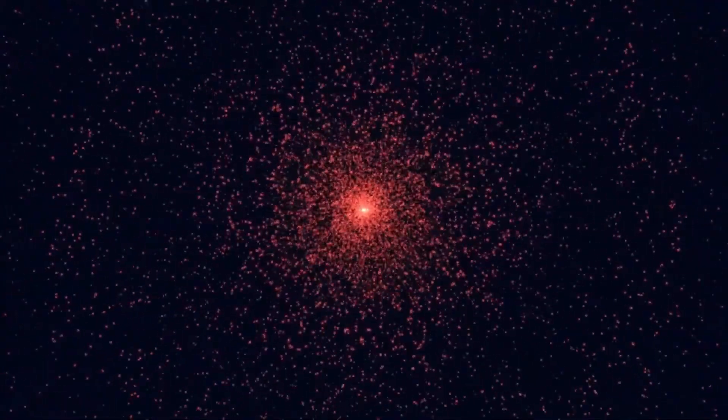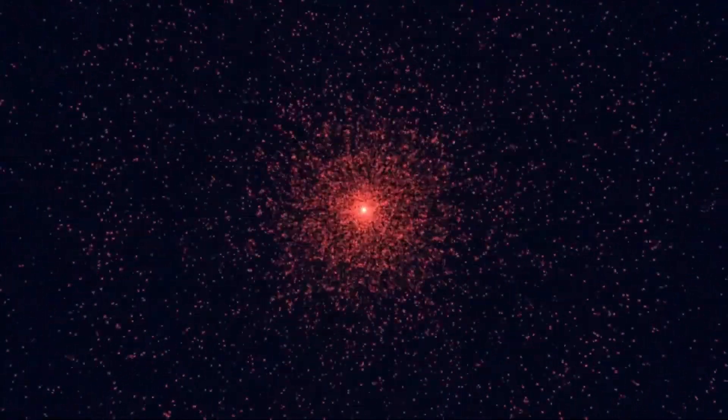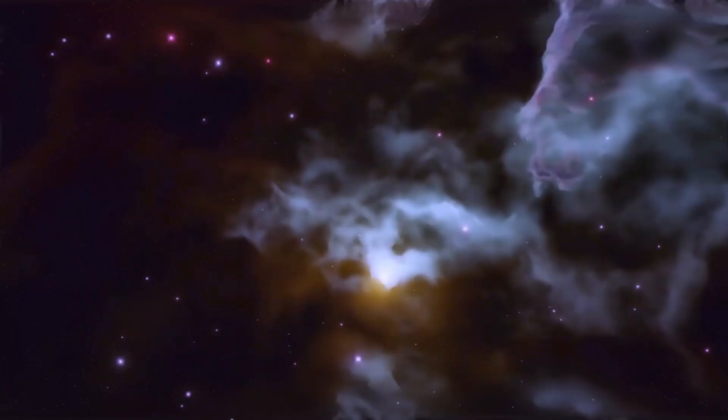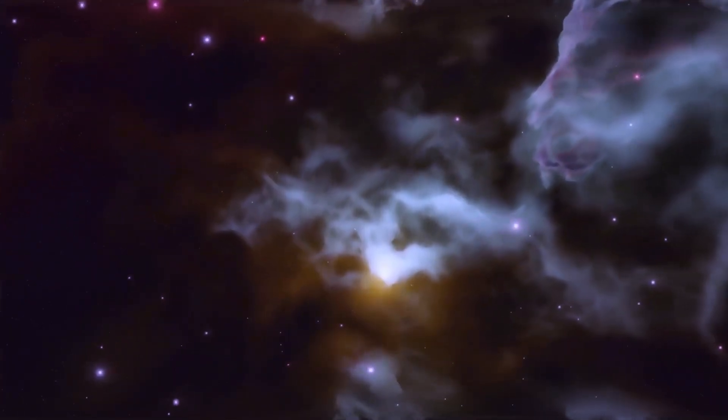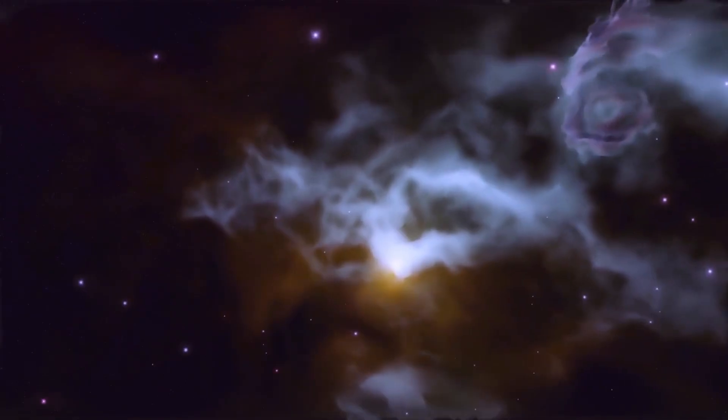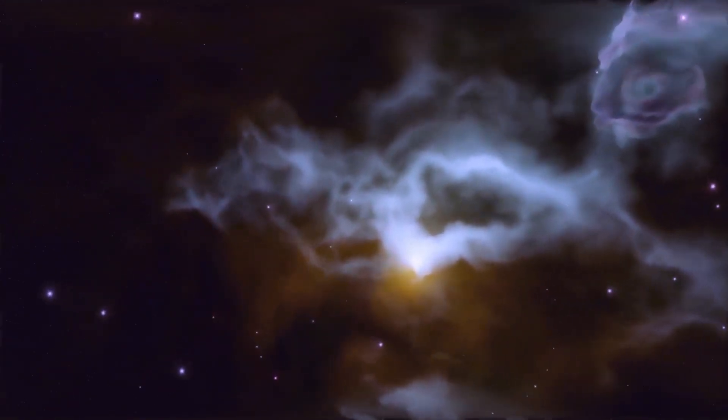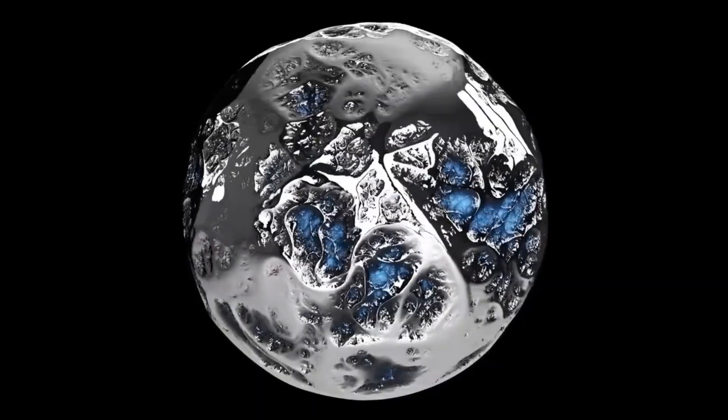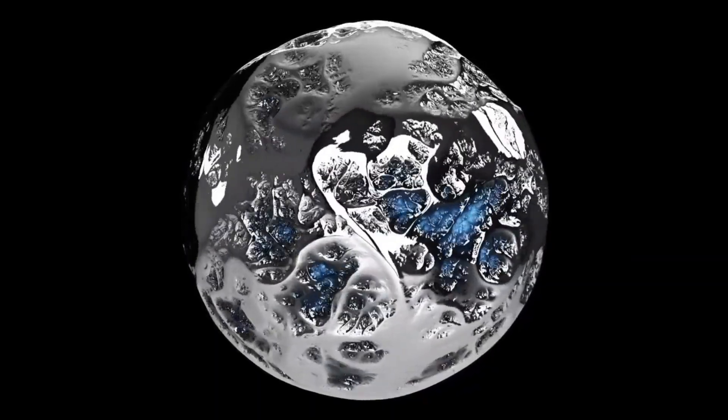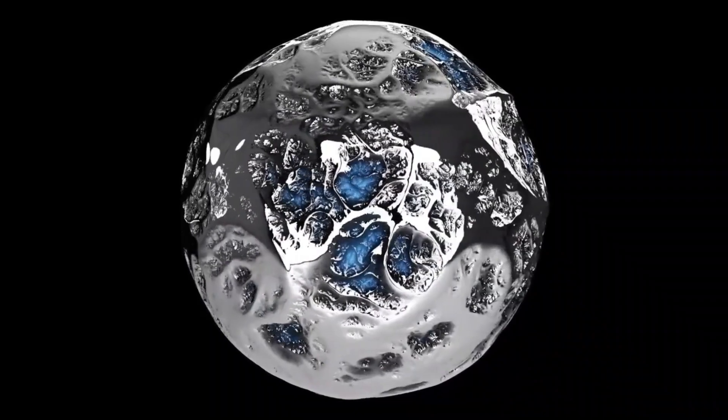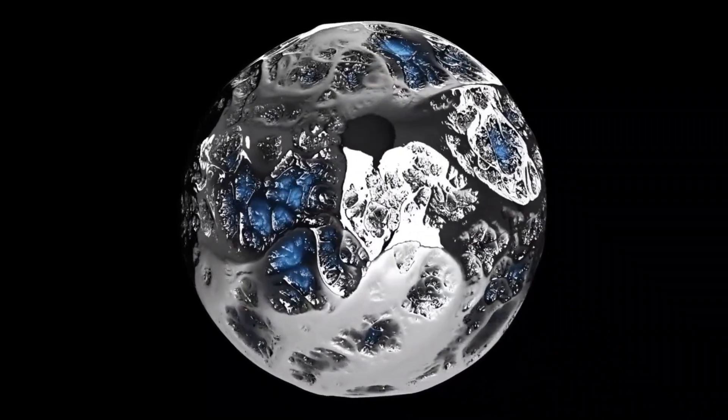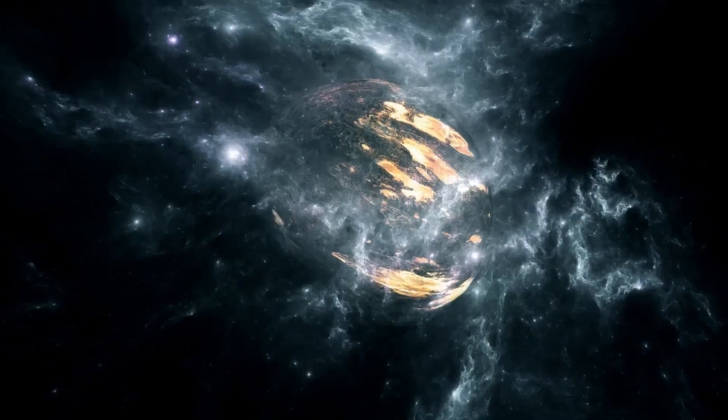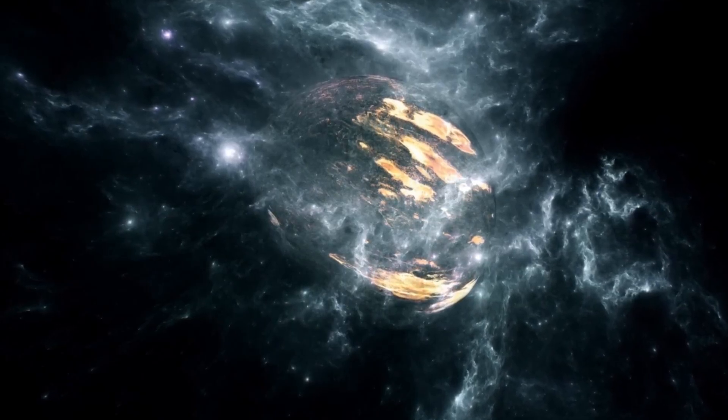It has undergone a radical transformation from a hot blue star to the cooler red supergiant we observe today. As it burns through its nuclear fuel, Betelgeuse is gradually losing mass and undergoing immense changes within its core. One of its defining features is its distinctive red hue. Unlike stars like our sun, which shine with a bright yellow light, Betelgeuse's surface temperature is relatively cool, around 3,500 Kelvin compared to the sun's 5,500 K. This cooler temperature results in the star's red appearance, providing astronomers with important clues about its internal processes and state of evolution.